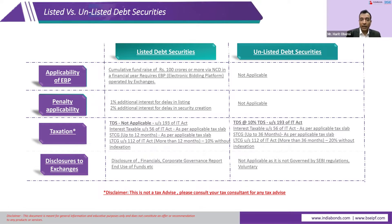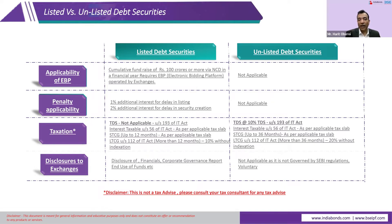Since listing has specific criteria, SEBI regulates it and has created guidelines which issuers must follow. There are important penalty clauses: if a listed security is not listed within four days of allotment, a 1% additional interest penalty is levied on the issuer and given to the investor. Similarly, if there is a delay in security creation, there is a 2% additional penalty to the issuer. These guidelines are not applicable for unlisted debt securities.